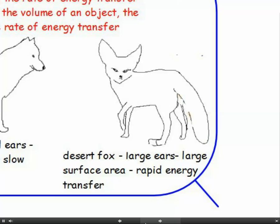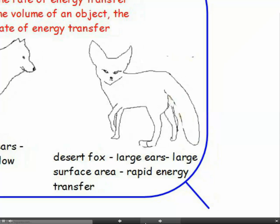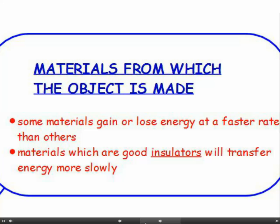Then there's the desert fox, a cousin of the arctic fox. He lives in a very hot environment. He's got large ears, which gives him a large surface area — which is a good thing because he loses his energy quickly to the surroundings. He's able to lose heat more rapidly, and that helps him survive in his hot environment.